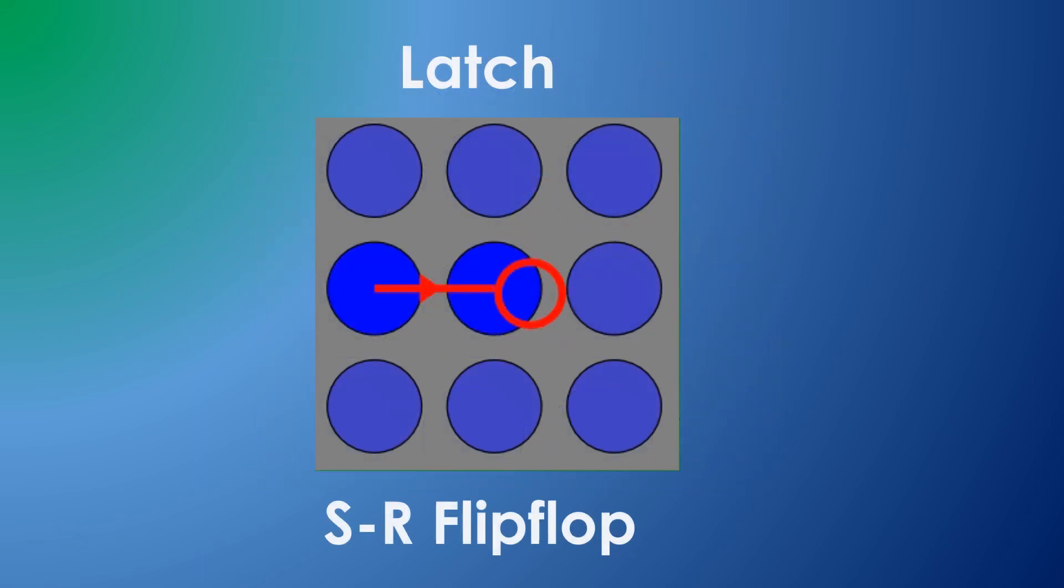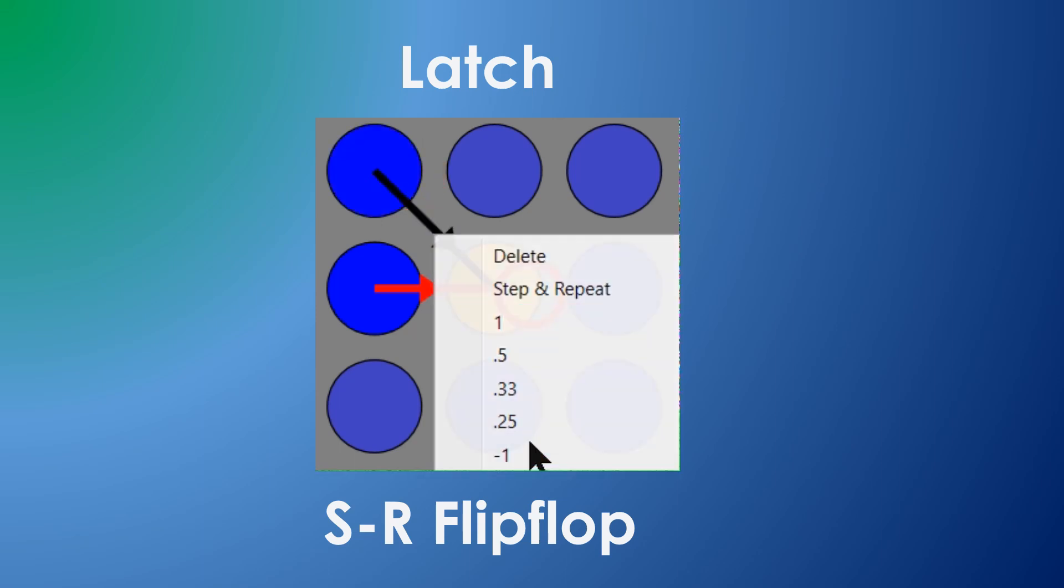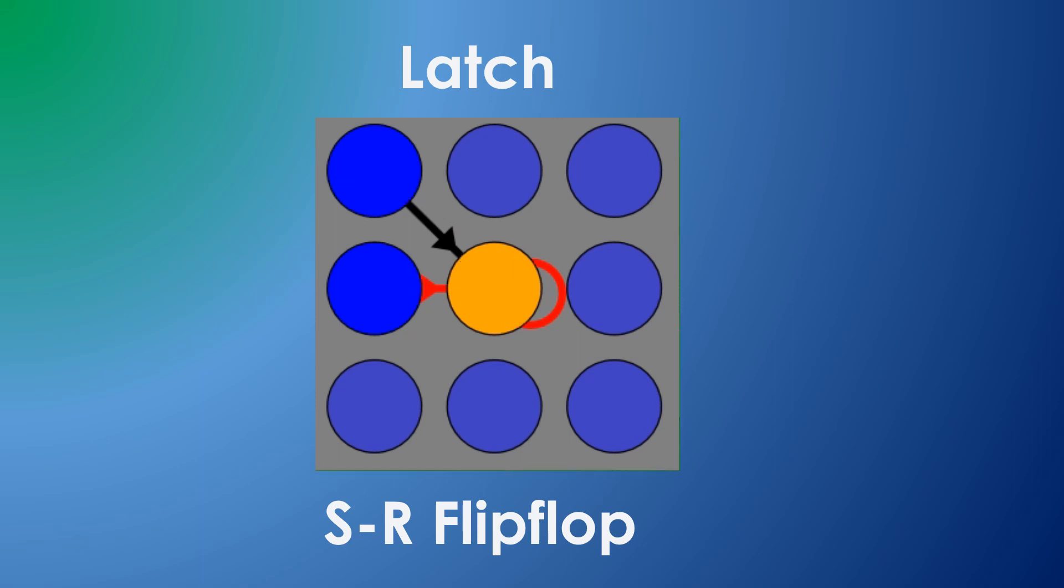By connecting a neuron to itself with a plus 1 synapse, if the neuron ever fires, it will fire continuously until some negative synapse causes it to stop. In this way, I can use a single neuron as a single bit of short-term memory.